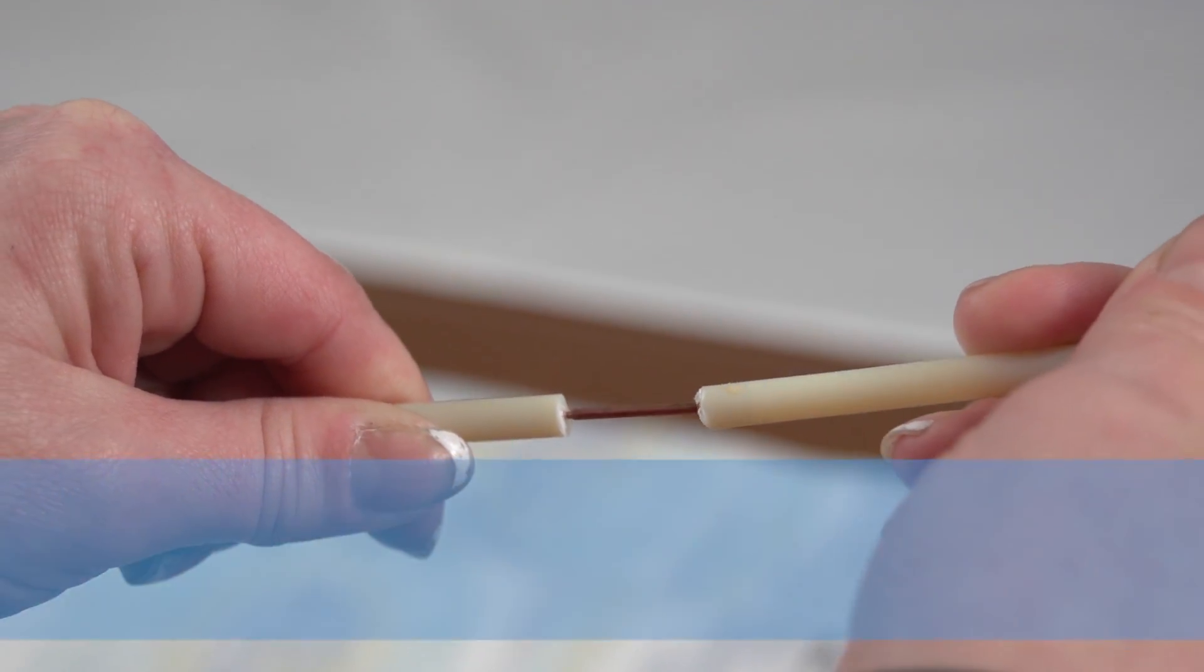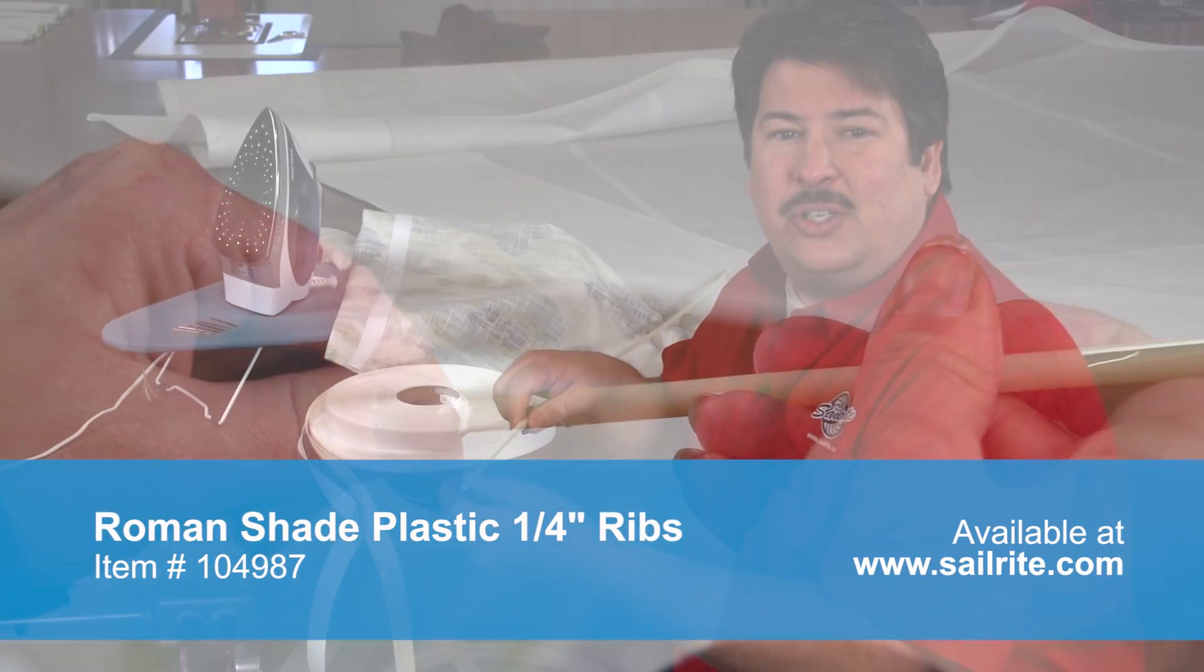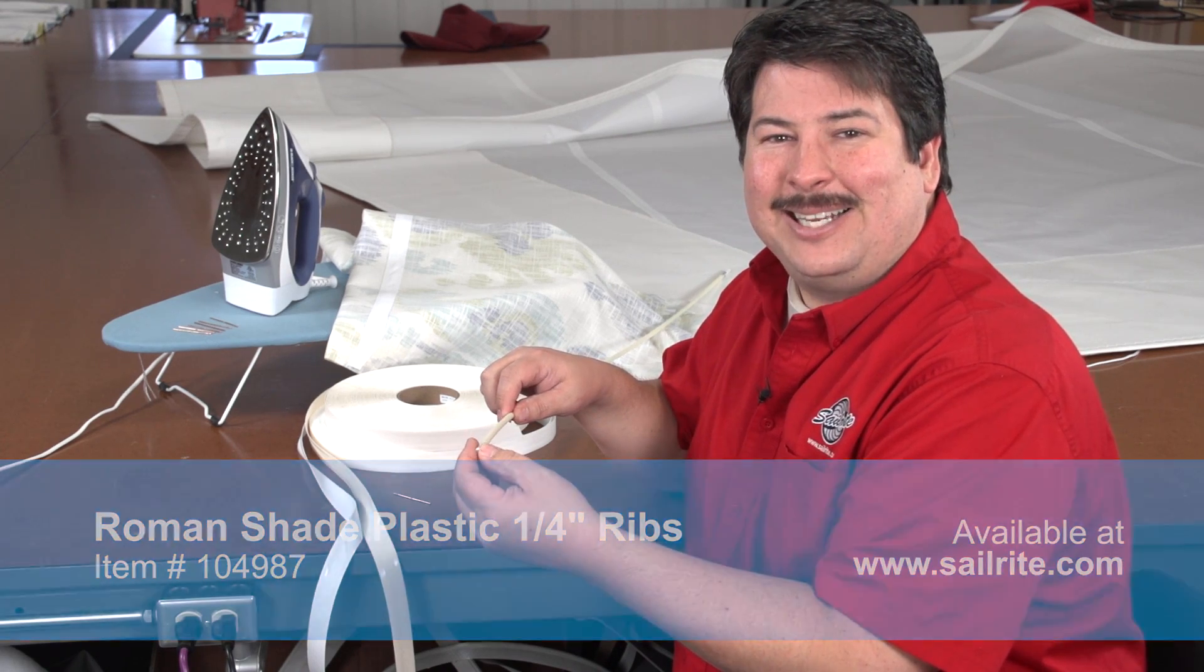Roman Shade Plastic Quarter-Inch Ribs and the splicers to extend the length are available at Sailrite.com.